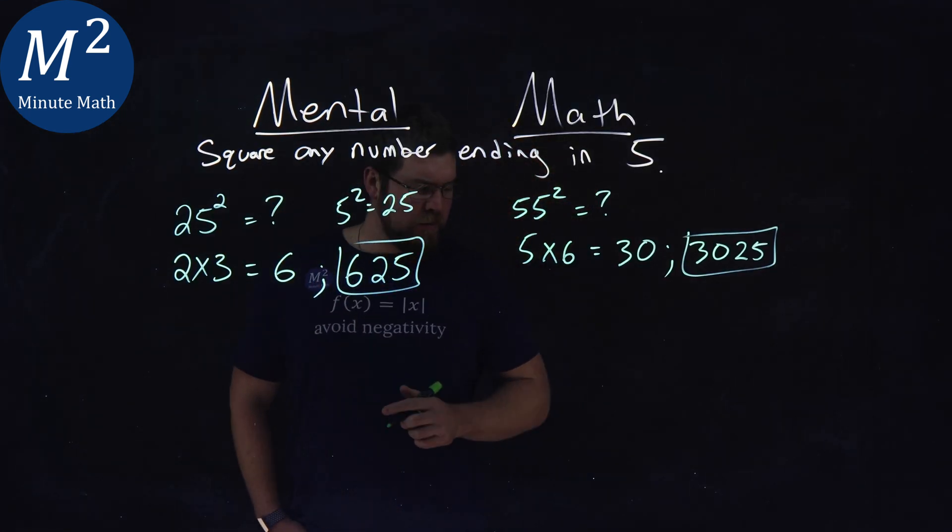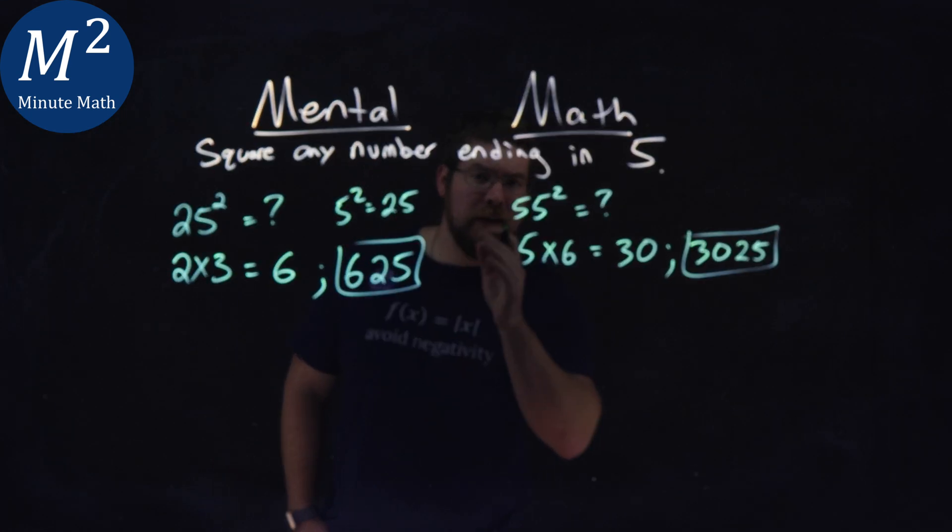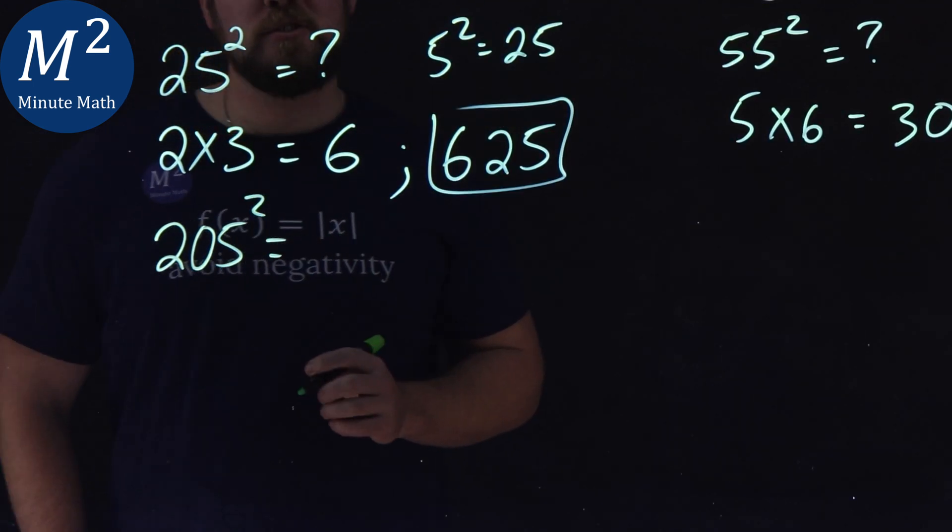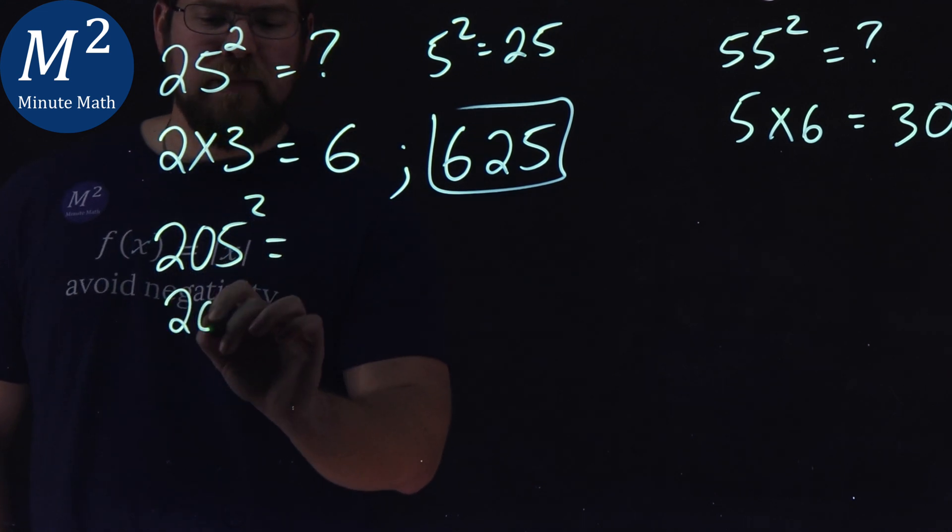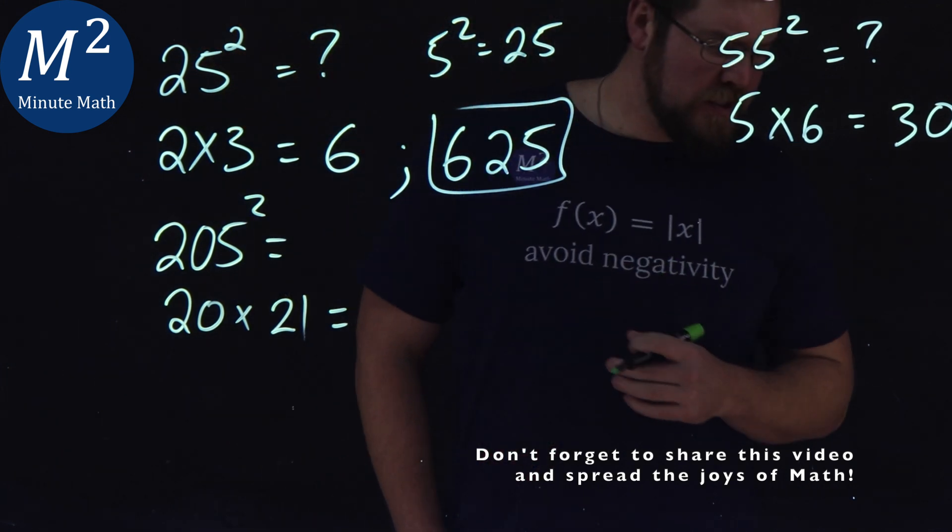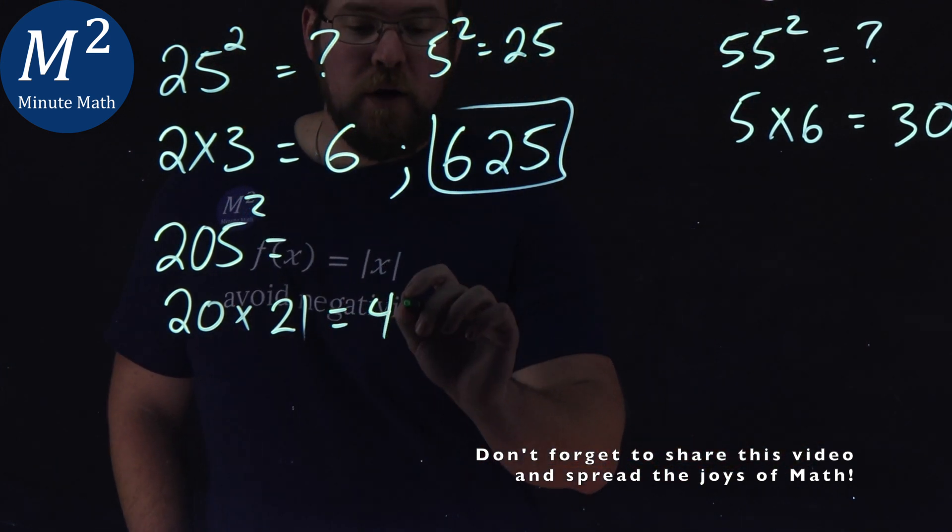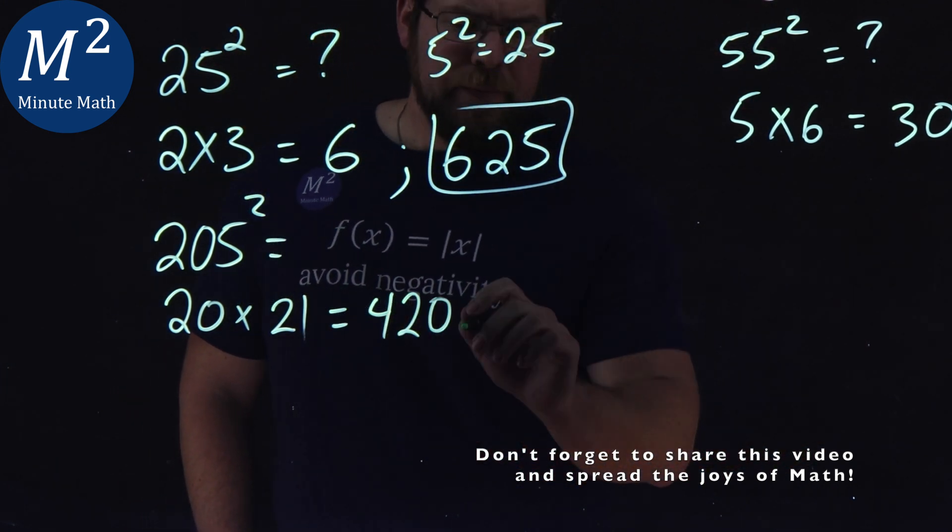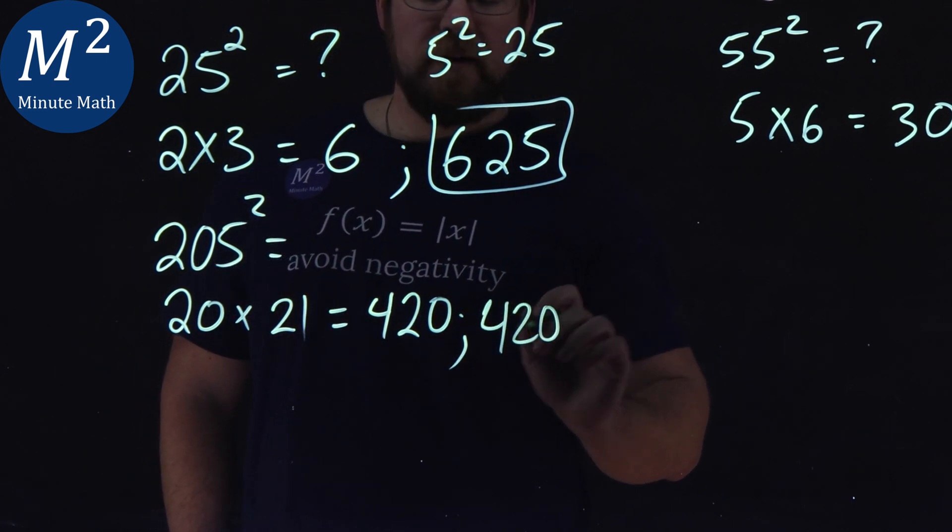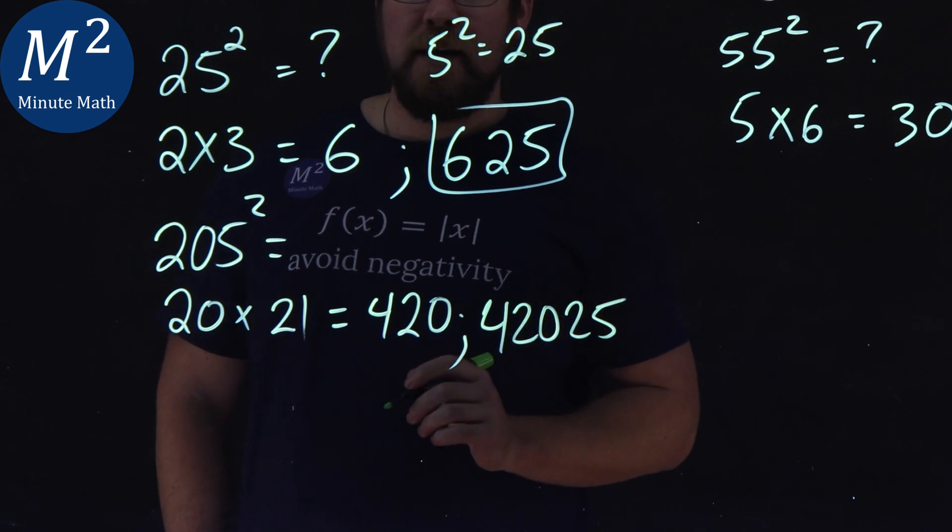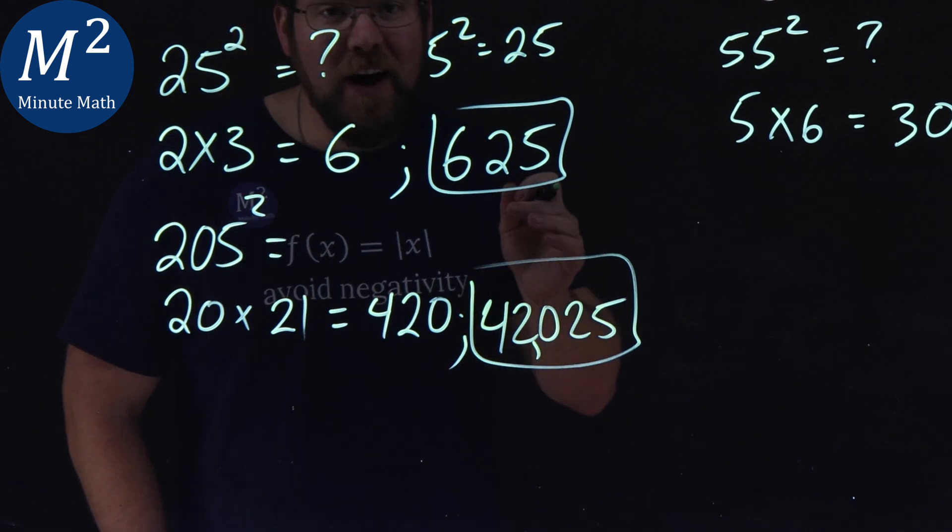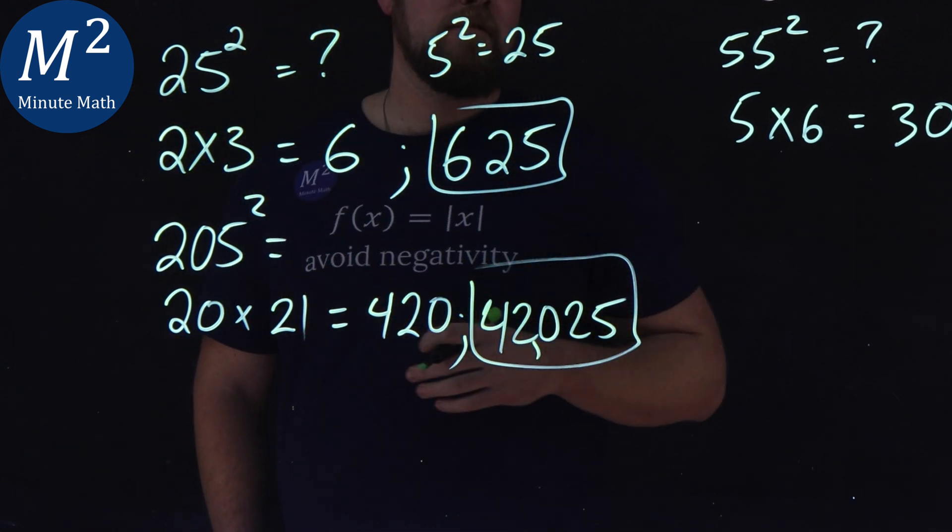Let's keep on going. Let's go to some harder problems here. What about a 205? So, I take a 205, same idea. We're trying to square that. I take 20, I multiply it by one more, 21. 20 times a 21 is a good old 420. From there, we have 5 squared, which is a 25. So, we take 420, add a 25 to the end, and there we have it. We have a 42,025 as our answer for 205 squared.